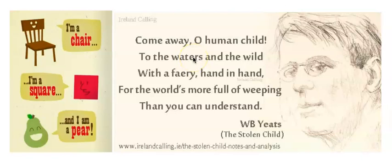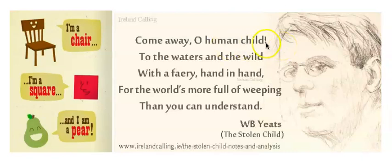On this side we have an excerpt from a poem, one of my favorites, by William Butler Yeats. Here we have some examples of exact rhyme. 'Come away, O human child, to the waters and the wild.' Child, wild.